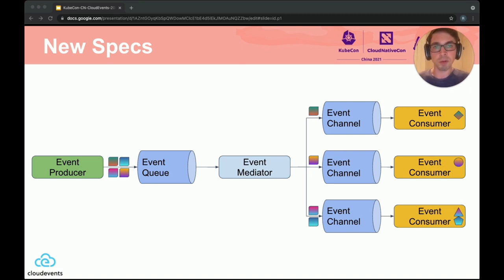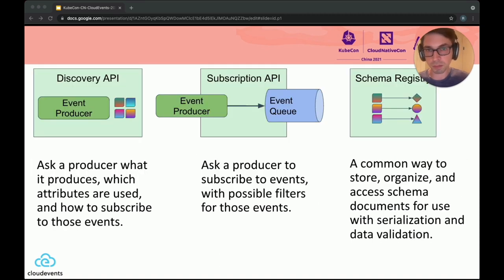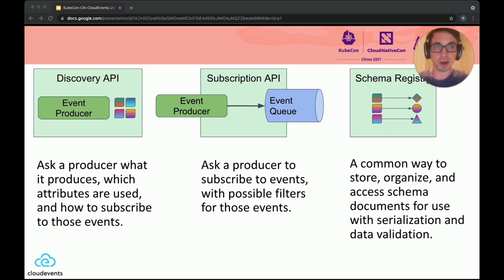The group over the last two years has been discussing this and has come up with three new projects and specs being worked on: Discovery, Subscriptions, and Schema Registration. These specs are largely independent but do work together. Together, we believe these will ease the end-to-end lifecycle management of events — how they're discovered, how they're received, and how they're used.